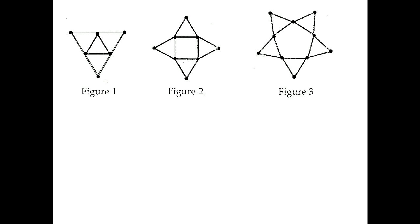In the second figure we can see a square, and from each side a triangle is drawn. The number of sticks equals the number of sides in those triangles. Since there are 4 triangles, the total number of sticks needed is 4 × 3 = 12.